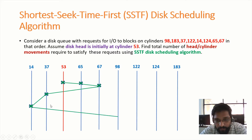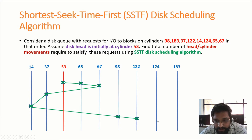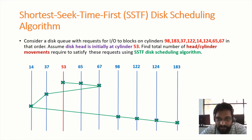From cylinder number 14, cylinder number 98 is nearer compared to cylinder number 122, so we move the disk head towards cylinder number 98. Next, we move the disk head towards cylinder number 122, then towards cylinder number 124, and finally towards cylinder number 183. Since we have serviced all the requests present in the I/O queue, we now need to identify the total number of head movements.